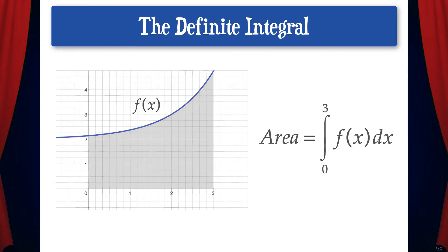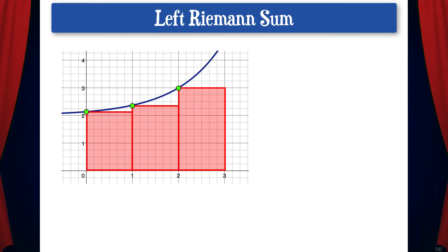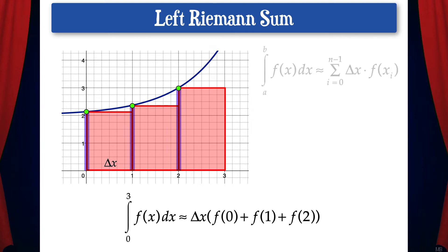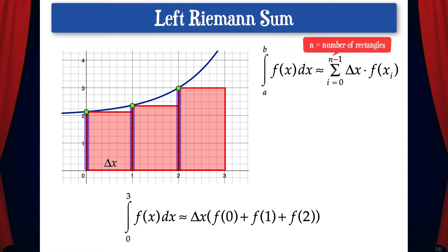So let's dive in and see how this works. We'll start by revisiting the idea of a left Riemann sum, and we'll start simple by just using three rectangles. If we do this, the definite integral is approximately equal to delta x times the quantity of f plus f plus f. Now we can also represent the sum of the areas of the rectangles using summation notation. So the integral from a to b of f dx is approximately equal to the sum of delta x times f, where i is a counter that increments from 0 to n minus 1, where n is the number of rectangles.